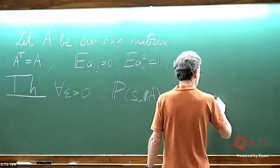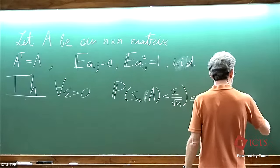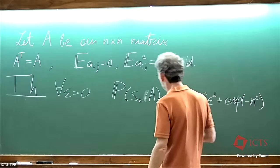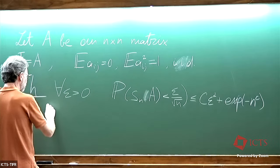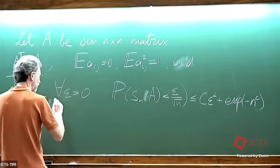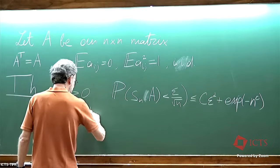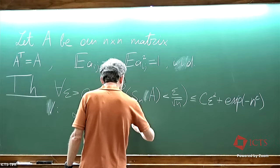That probability is less or equal than C times epsilon to the power alpha plus exponential of negative n to the power C. What we proved last time was a theorem of Vershynin, which proves this statement with alpha being 1/8, and C some absolute constant between 0 and 1.